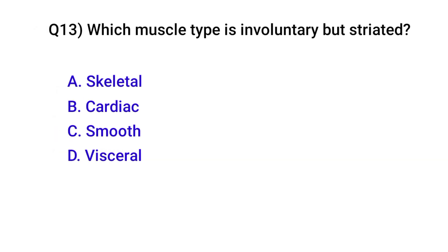Question number thirteen: Which muscle type is involuntary but striated? Correct option is D: Cardiac muscle.